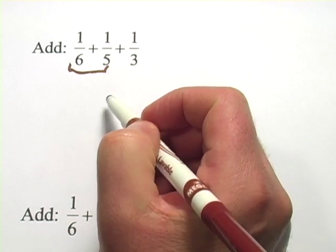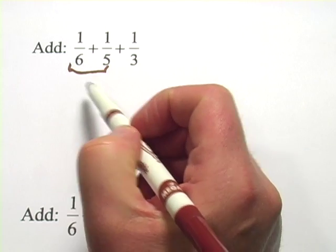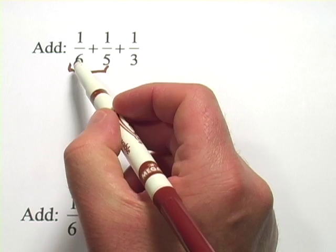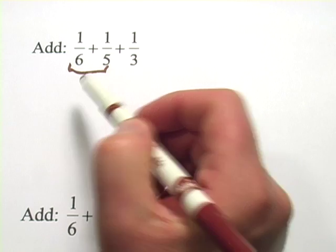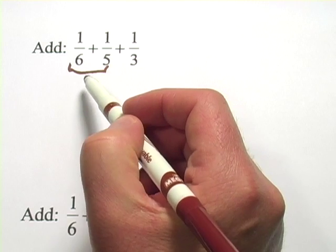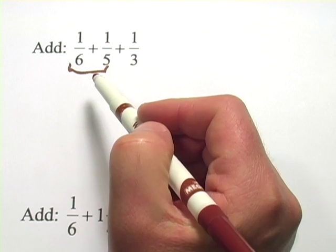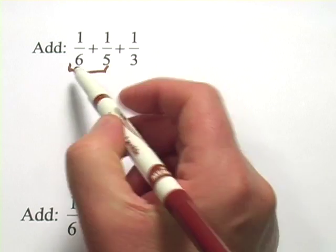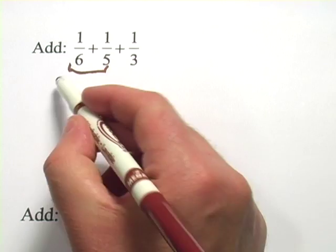So I'm going to try that. What I notice here is I don't have the same number on the bottom. I don't have common denominators, so I've got to fix that. Usually you fix that by multiplying one or both of them by some version of one so that you get the same thing on the bottom.